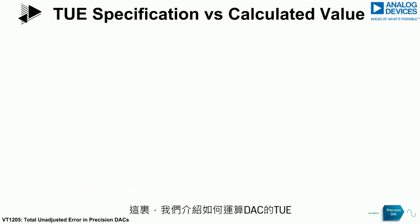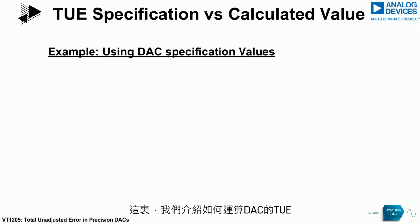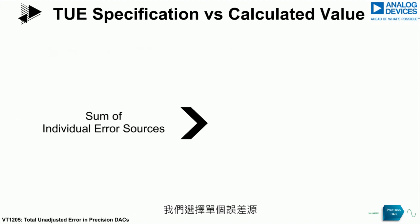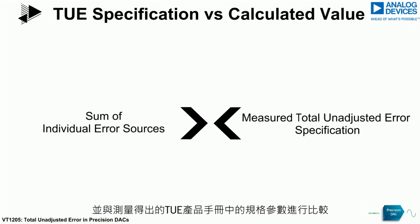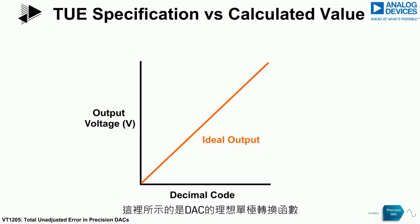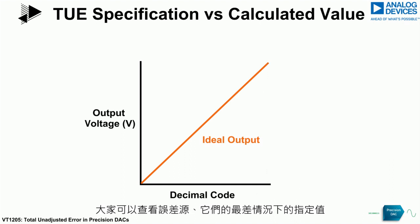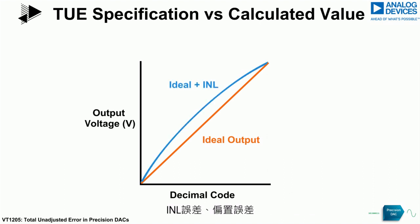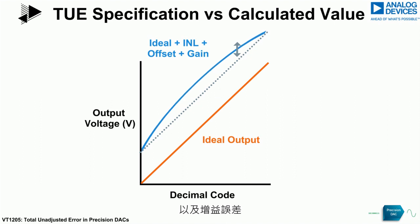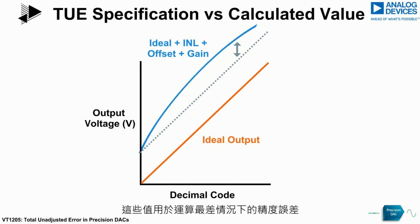Here we will go through the calculation of the TUE for a DAC, taking the individual error sources and comparing with the measured TUE datasheet specification. We show the ideal unipolar transfer function of a DAC where the analog output range goes from zero to positive full scale. Looking at the error sources and their worst-case specified values — the INL error, the offset error, and the gain error — these are used to calculate the worst-case accuracy error.